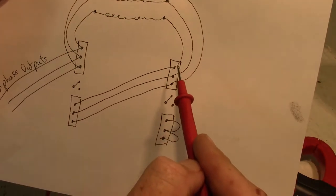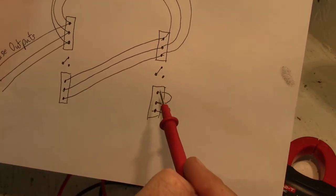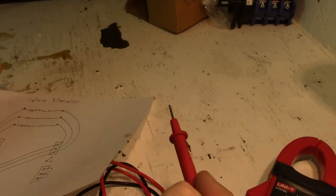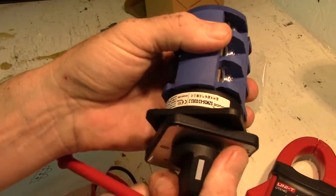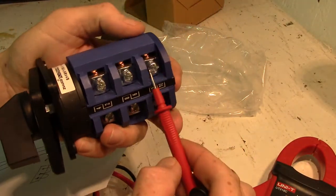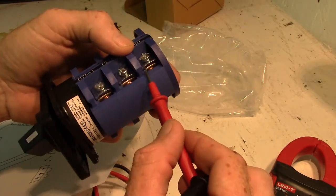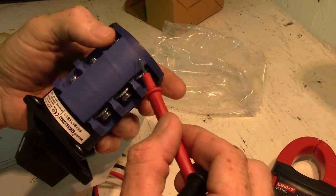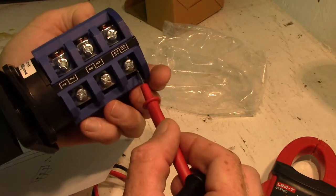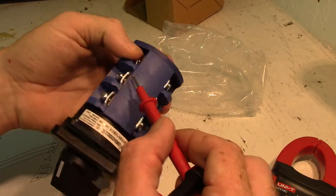On this number one terminal you want to short all these ones out, so that's these ones here. You want to connect these all together and then from this one here you want to have a jumper that goes all the way to this one on all three of them.